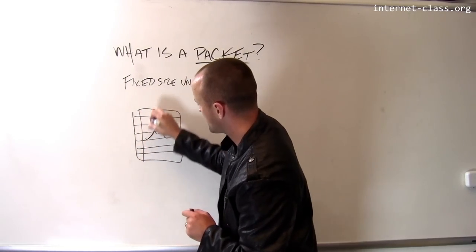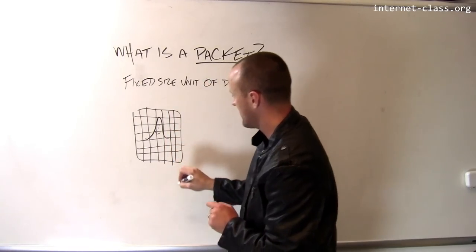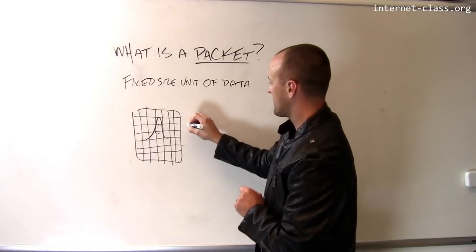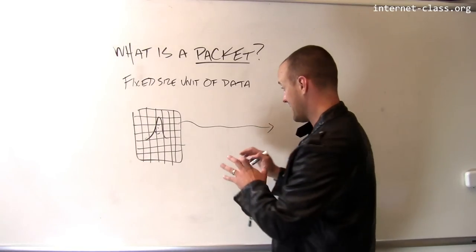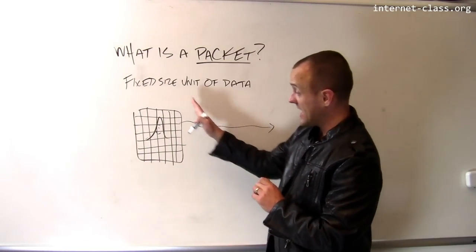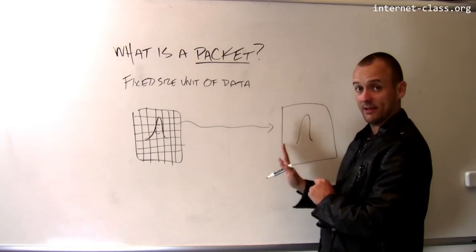depending on the network I'm using that will determine the size of these. And each one of these packets now gets independently transmitted over to the receiver. And the receiver is responsible for taking all of these packets and reassembling them into the image that I sent.